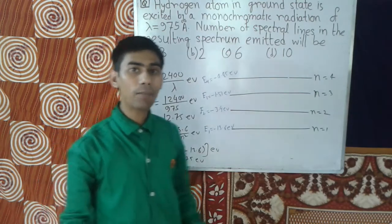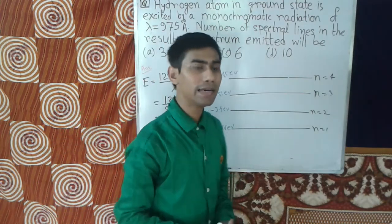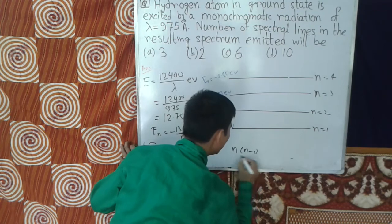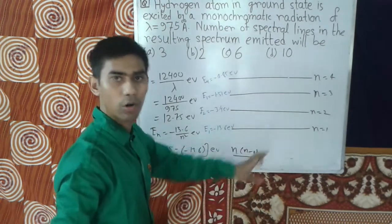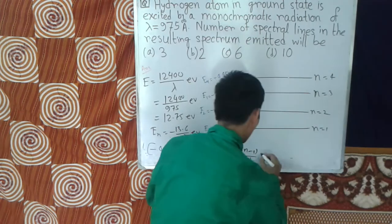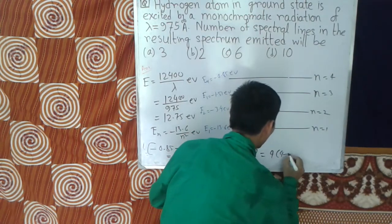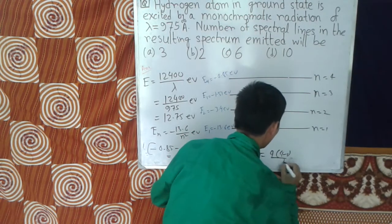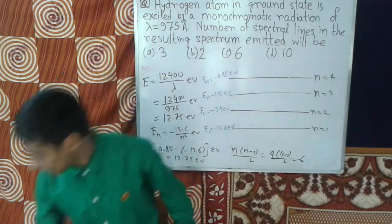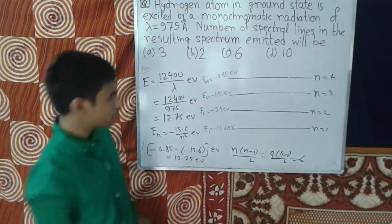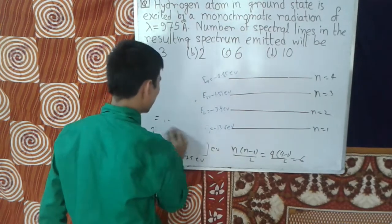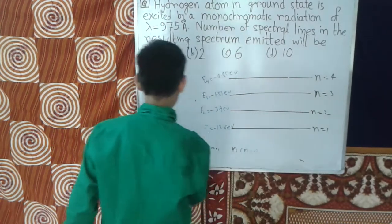The total number of spectral lines is given by the formula n times n minus 1 divided by 2. Here n equals 4, so we get 4 times 3 divided by 2, which equals 6. Therefore, the total number of spectral lines in this case is 6.